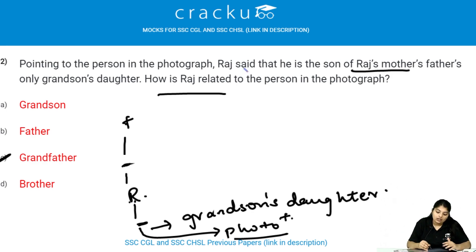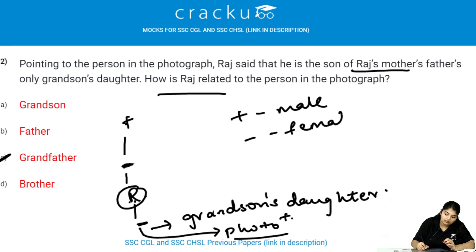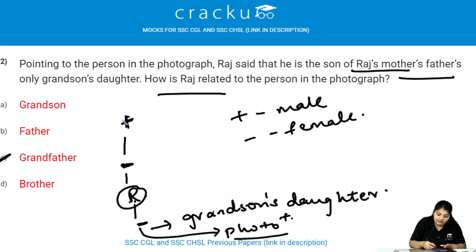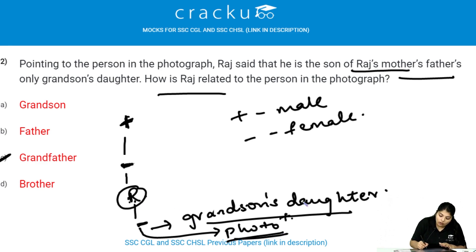Let me explain again. Raj's mother is female; mark minus for female, plus for male. Mother's father is plus. His only grandson is Raj — Raj is the grandson. Grandson's daughter is minus. The photograph person is the son of the grandson's daughter — so that is plus. Therefore, Raj is the grandfather of the person in the photograph. Answer is option C.